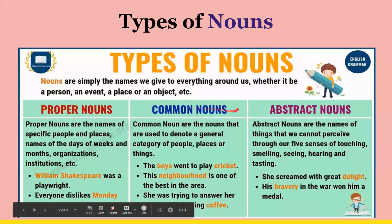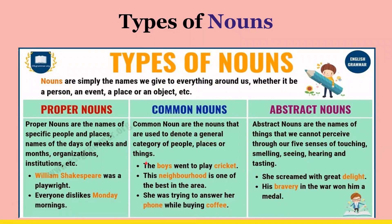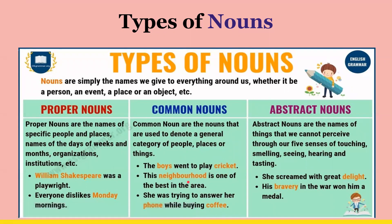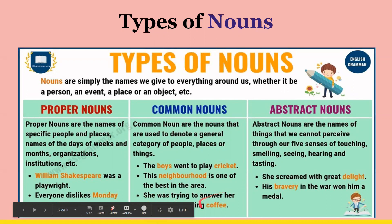Then we have common nouns. Common nouns are nouns that are used to denote a general category of people, places, or things. So we have the boys went to play cricket — that's the game. These are the nouns: the boys are the people. And this is the thing. The neighborhood is a place. Phone is a thing. And coffee is a thing. These are common words we use.